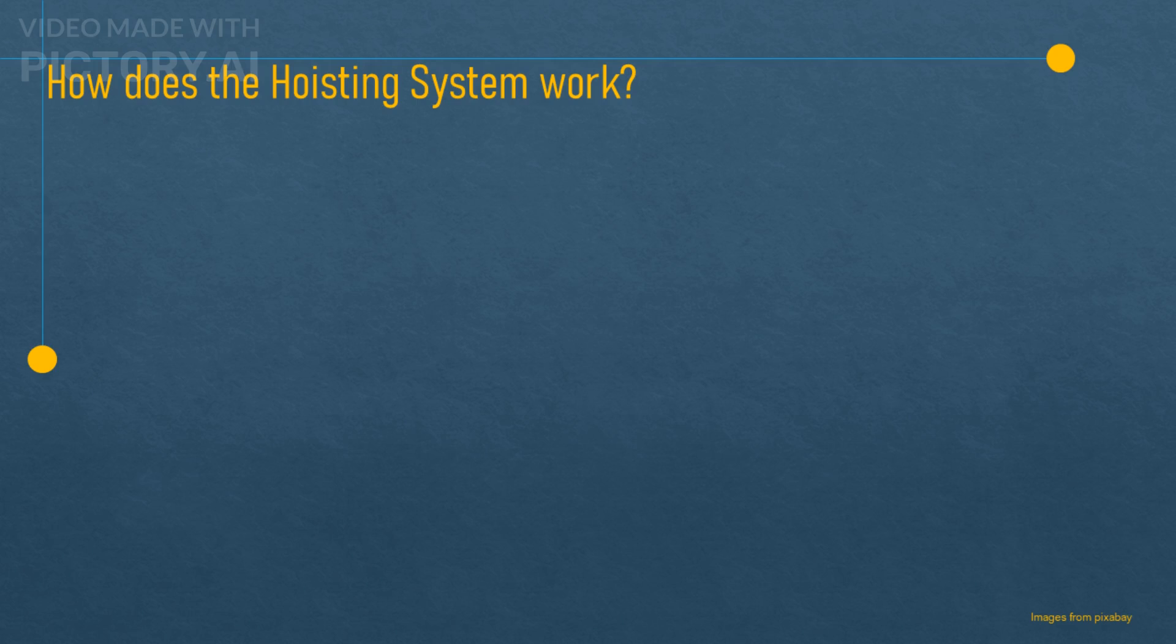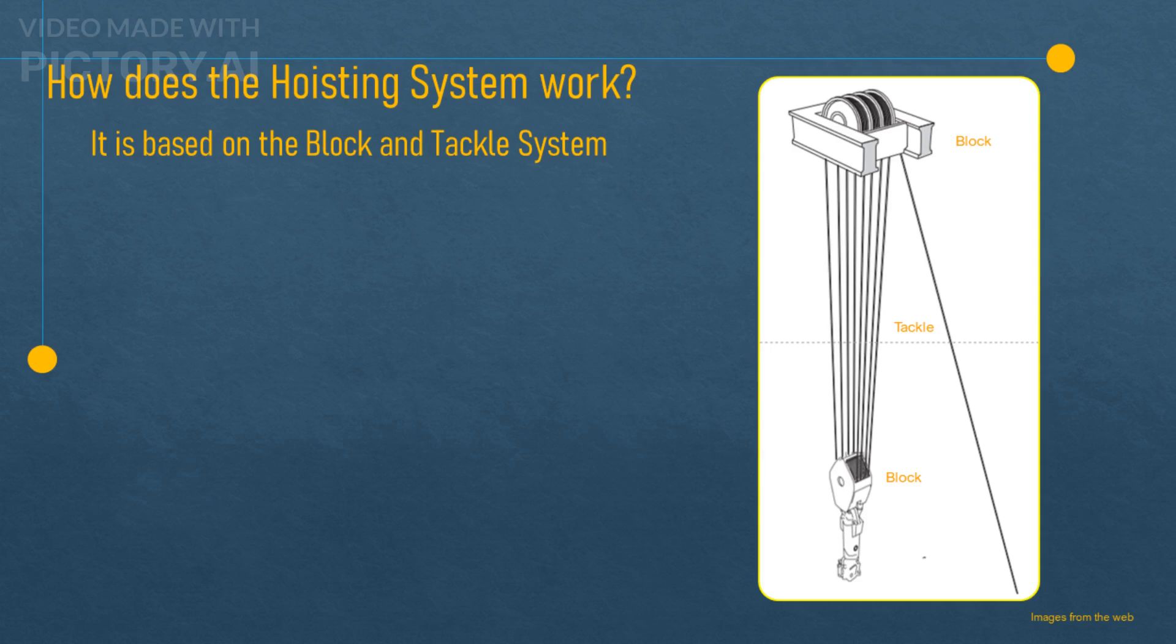So how does the hoisting system work? Well, it consists of several components that work together to create a block and tackle system. A block and tackle system is a simple machine that uses pulleys and ropes to multiply the force applied to an object. You may have seen this kind of system in movies where pirates use it to raise their sails or lower their anchors.